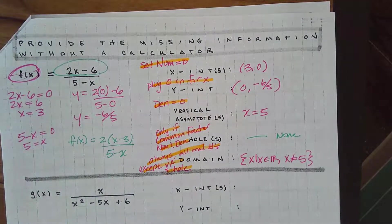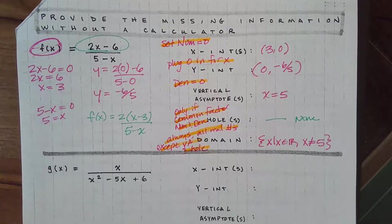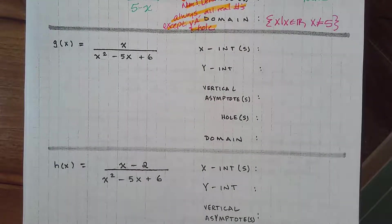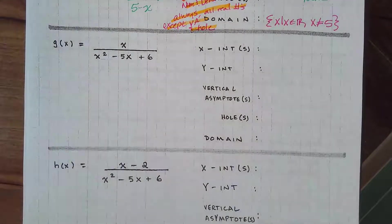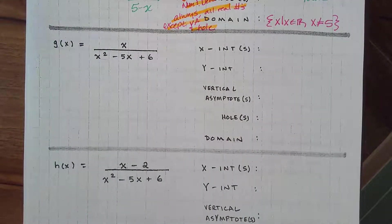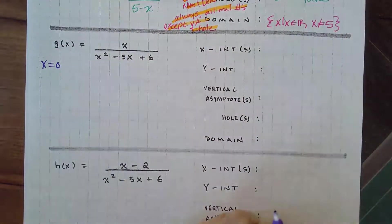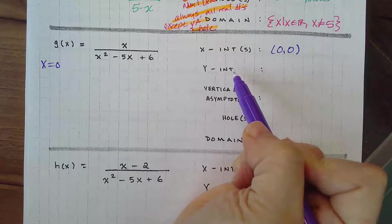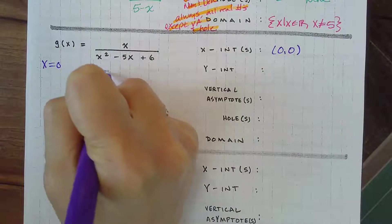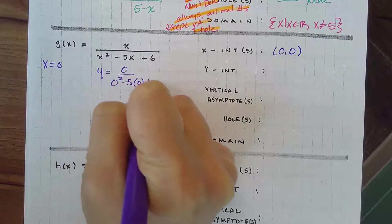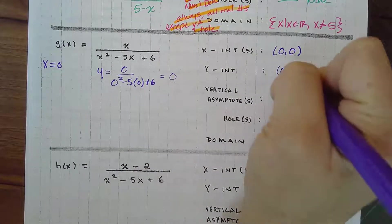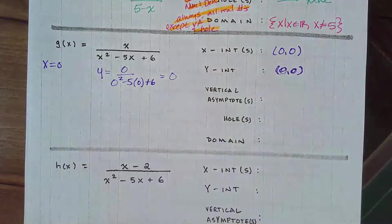That's the game plan for finding all this information. I'll go through the next two examples — if you want to try them on your own, pause the video, try them, then unpause and check your answers. Number two, g(x): I'm going to find my x-intercepts by setting my numerator equal to zero. My numerator is just x, so x equals zero. My x-intercept is zero. For the y-intercept, plug zero in for x — zero divided by anything still gives me zero — so my y-intercept is the point (0, 0).